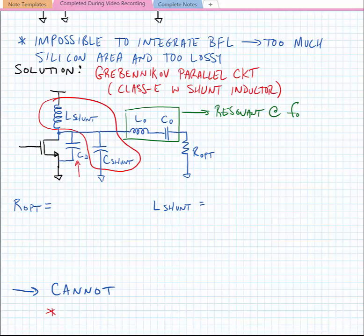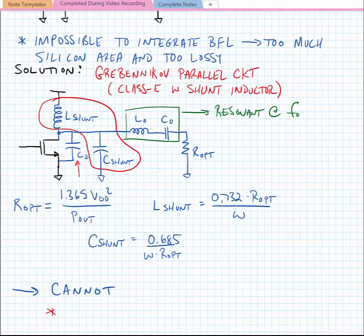So here with this shunt circuit, we can calculate a new R-opt, a new L-shunt, and a new C-shunt. So our new R-opt is equal to 1.365 VDD squared divided by P out. Our L-shunt is equal to 0.732 times R-opt divided by omega, the frequency of operation. And our C-shunt is equal to 0.685 divided by omega times R-opt. And these are all derived by Gravennikov.